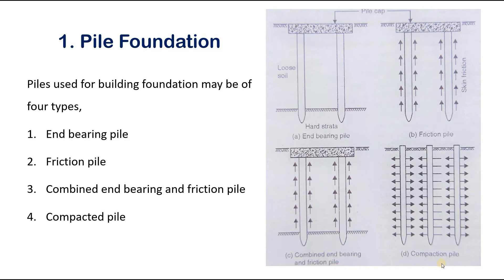Next is combined end bearing and friction piles, in which the superimposed loads are transferred both through side frictions as well as end bearings. Such piles are more common, especially when the end bearing piles pass through granular soils.